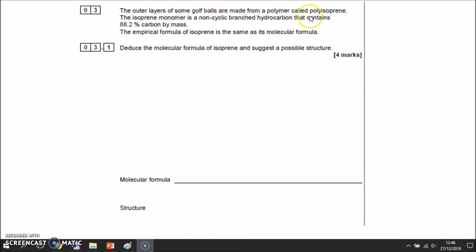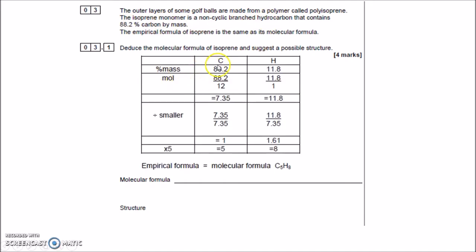Question 3: the outer layers of some golf balls are made from polyisoprene. The isoprene monomer is non-cyclic, branched, and a hydrocarbon containing only hydrogen and carbon. It contains 88.2% carbon by mass, so hydrogen = 100 − 88.2 = 11.8%. Divide by atomic masses: 88.2 ÷ 12 = 7.35 for carbon, and 11.8 ÷ 1 = 11.8 for hydrogen.